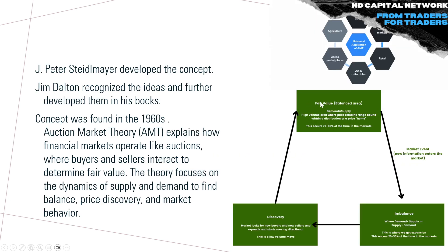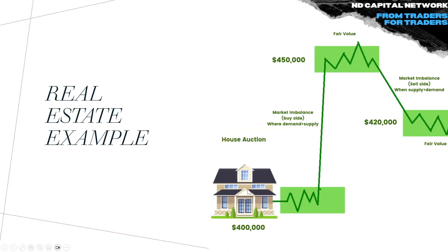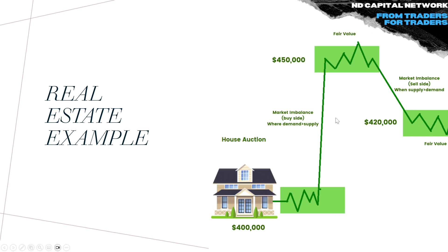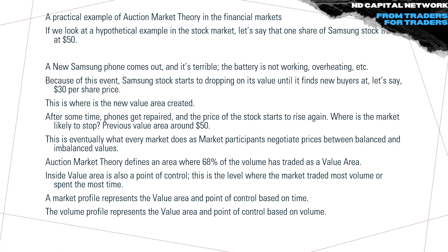Coming back — you have discovery, then price becomes efficient and you find fair value. Then an imbalance occurs. Here's a real estate example: imagine a house auction in a neighborhood where houses are being auctioned between 350 and 450 dollars — price is balanced in that range. Then something happens — let's say Donald Trump moves into the neighborhood — and all of a sudden the new fair value jumps up. A market event occurs, an imbalance is created, and then a new fair value is established. The imbalance comes from the buy side, and then you find that new variable.